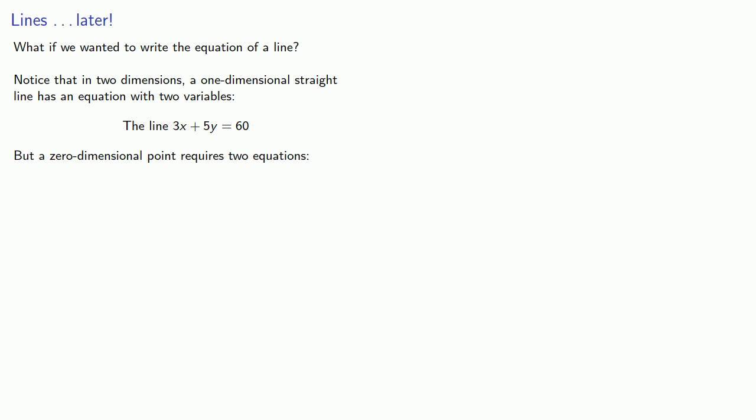What if we wanted to write the equation of a line? Well, let's make a few observations. Notice that in two dimensions, a one dimensional straight line has an equation with two variables. The line 3x plus 5y equals 60. But a zero dimensional point requires two equations, the point where x is equal to 5, y is equal to 8. And that's because the point is at the intersection of two lines. And in fact, if you think about it, x equals 5, y equals 8 are the equations for two lines.